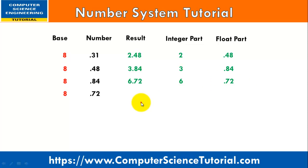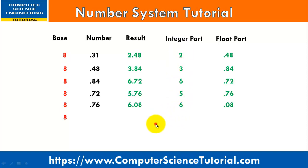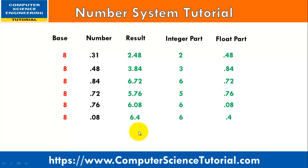8 multiplied by 0.72 returns 5.76 — the integer part is 5 and the decimal part is 0.76. 8 multiplied by 0.76 returns 6.08 — the integer part is 6 and decimal part is 0.08. This process is repeated until you find a repeating pattern in the integer part, or you can stop after at least 5 or 6 steps. Here you can see 6 is repeating, so I stop the multiplication process.